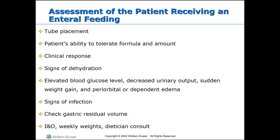Measure the gastric residual volume using a syringe or by drainage to the reservoir. Assess residual volume every four to six hours for patients on continuous feeds to ensure they are actually digesting the formula. Check it before each intermittent feeding, and any volume of 200 milliliters or more needs to be investigated.